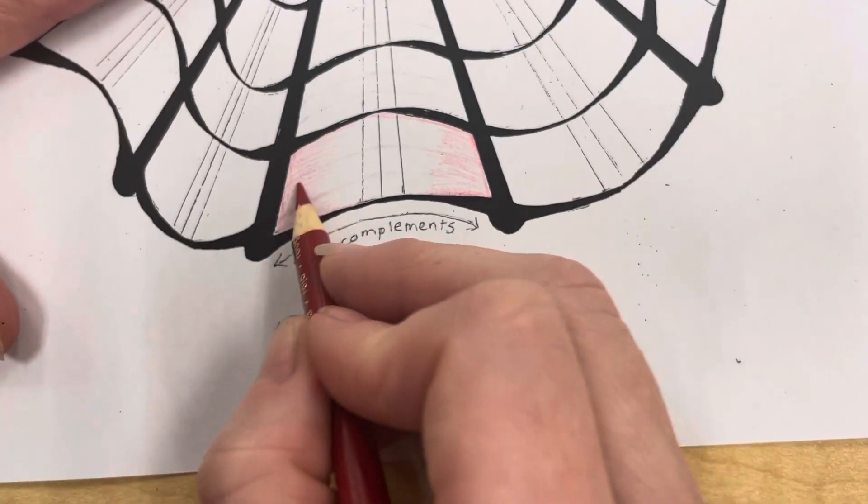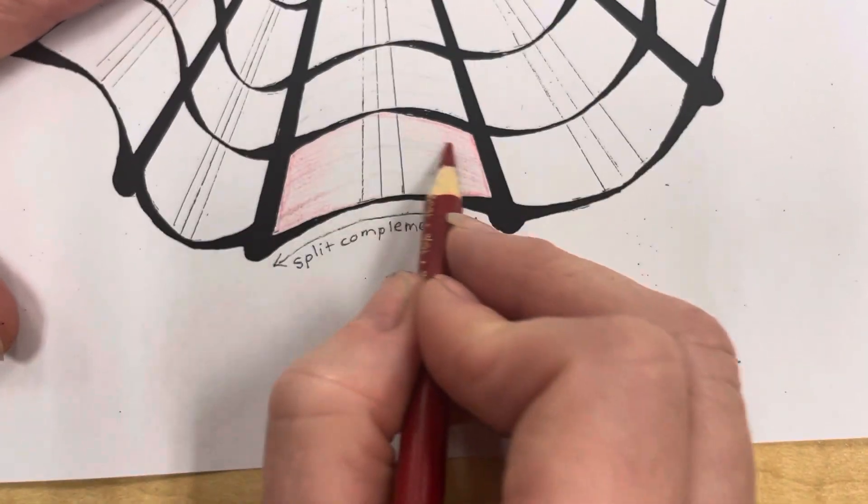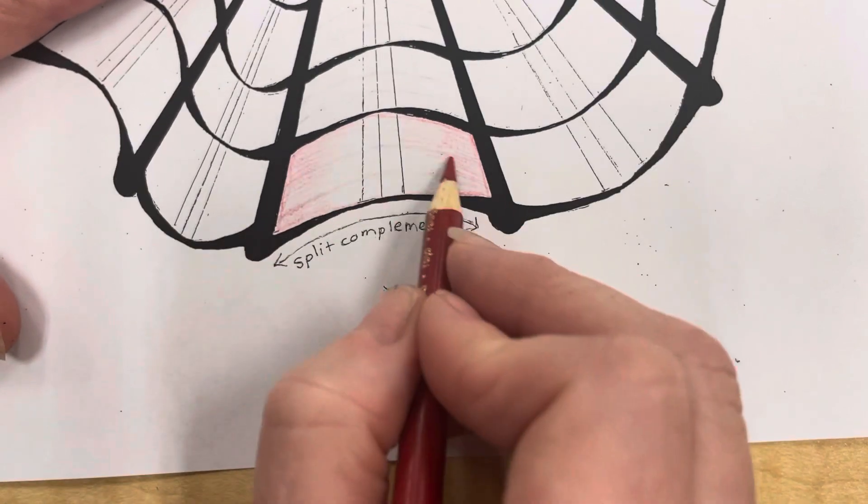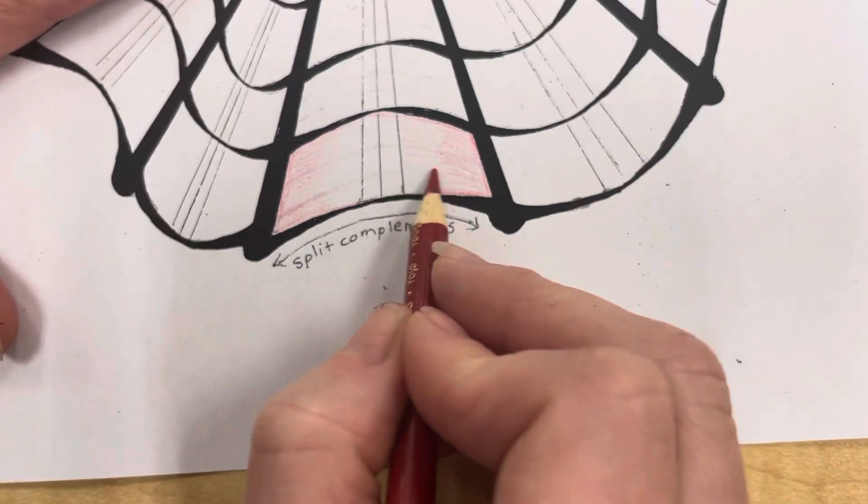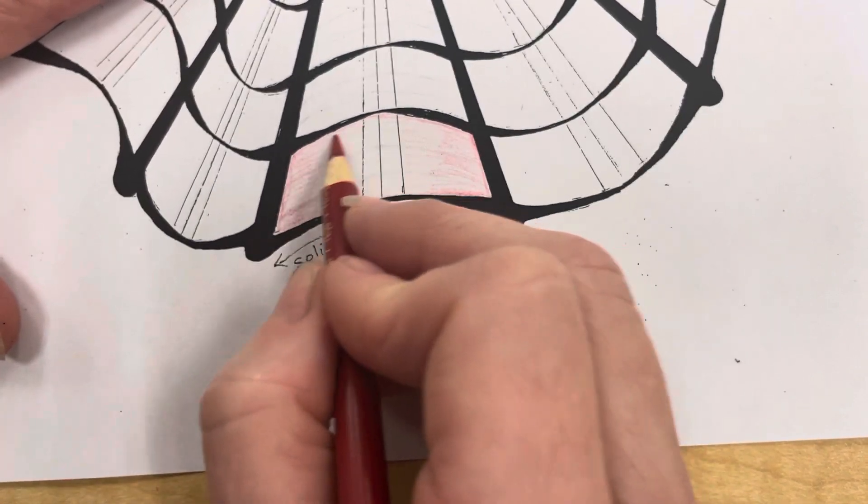As you go, I'm going to make these really, really light as I get towards the center. On the center I want to basically leave white.